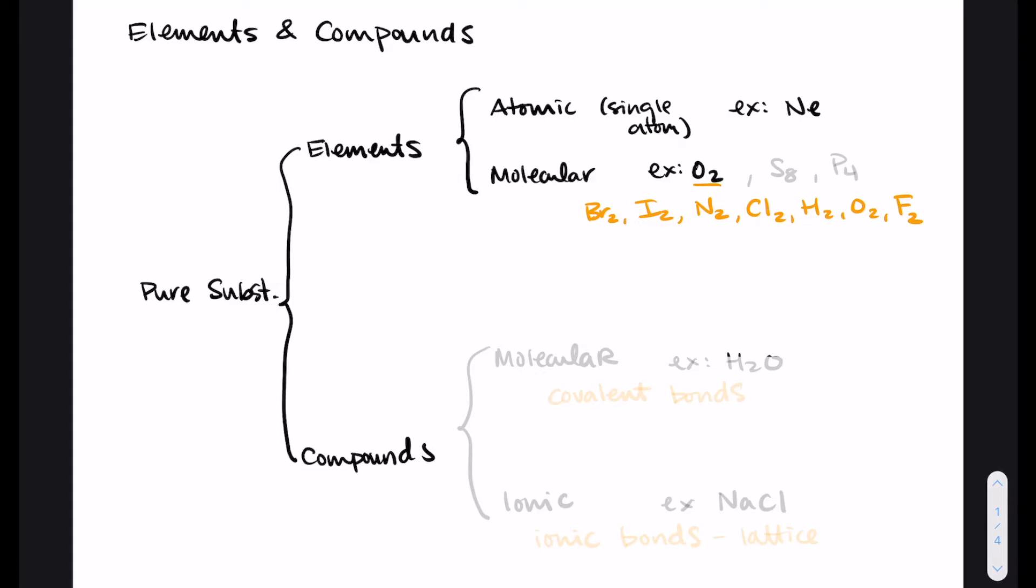Now there is a set of elements that are found as diatomics. You should know this list. There are a bunch of different acronyms out there to help you remember this list. The one that I was taught is BRINCLEHOFF, which is just a funny sounding word that is made up of these elements in a specific order. So if you can spell it, you can write the elements out. So that would be bromine, iodine, nitrogen, chlorine, hydrogen, oxygen, and fluorine, where they all exist as diatomics. So it's Br2, I2, N2, Cl2, H2, O2, and F2.